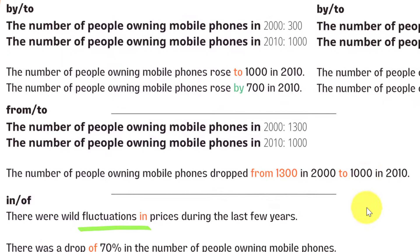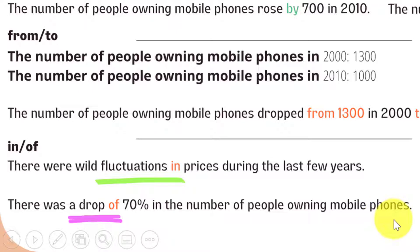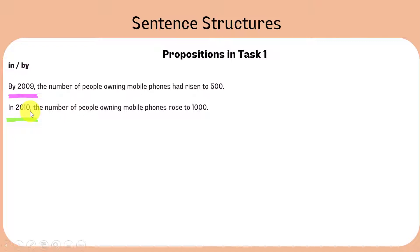Instead of 'fall to' and 'fall by,' you can use 'drop from A to B.' We also need a preposition when we use the noun forms. For example: 'There were wild fluctuations in prices during the last few years' or 'There was a drop of 70% in the number of people owning mobile phones.' Additionally, 'in' plus a specific time in the past is used with the simple past, while 'by' plus a specific time in the past is used with the past perfect, to give the idea that the increase had happened in the years leading up to that point.